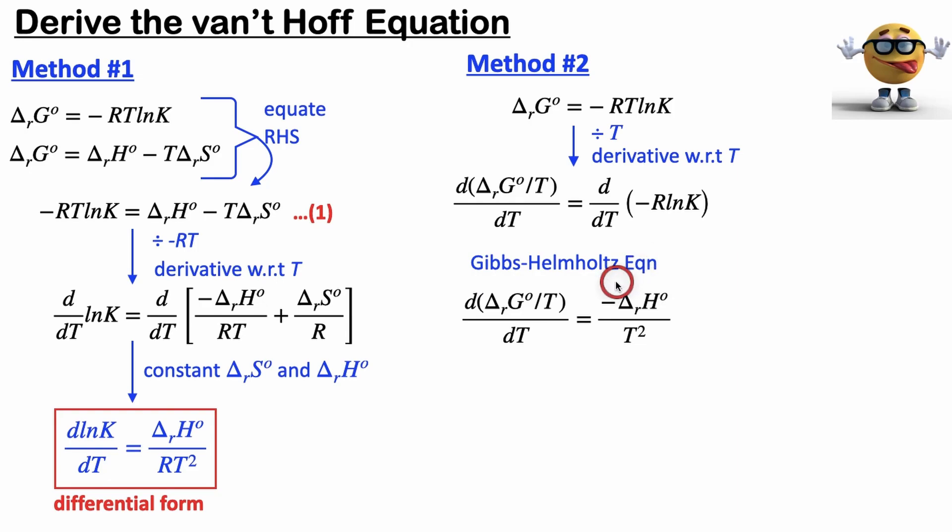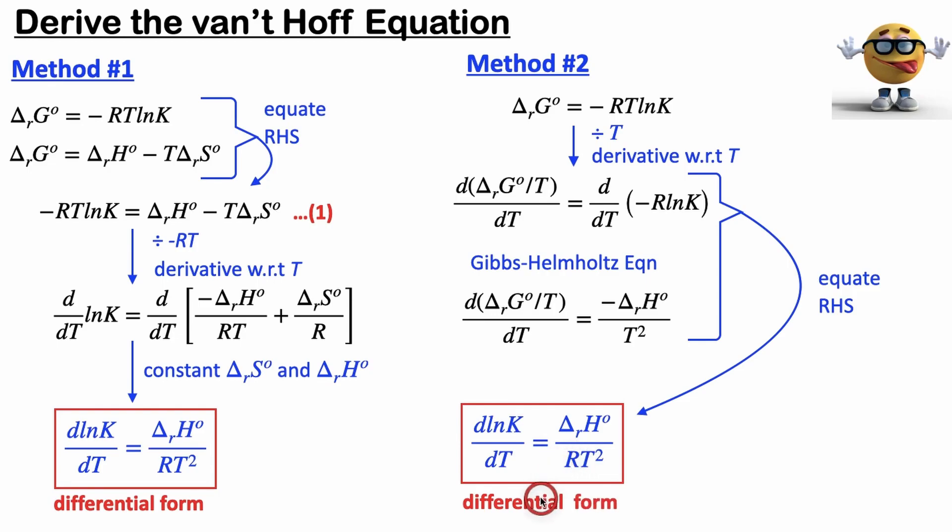And I've derived this equation many, many ways. You can check those links out if you like, but this is the differential form right here. And the left-hand sides of these two equations are equal to each other, which means the right-hand sides have to be equal to each other. So if we equate the right-hand sides, boom, just like that. We've got the Van't Hoff equation in differential form.